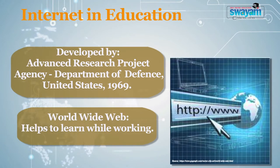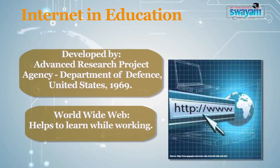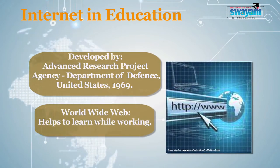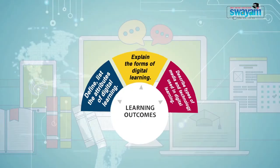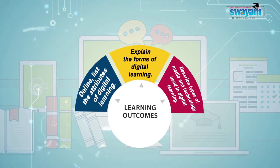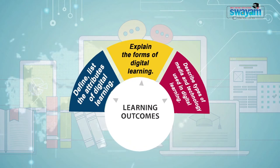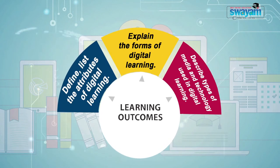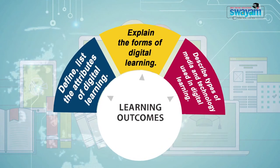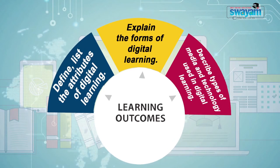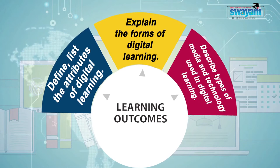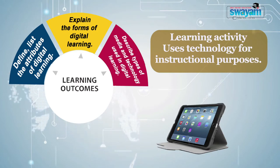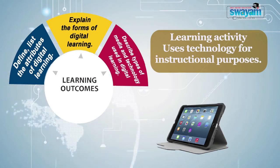This form of digital learning has been used in various programs, and you can easily obtain certificates for any program from reputed institutes using the worldwide web. The learning outcomes of this module: you should be able to define digital learning, list its attributes, understand the forms of digital learning, and describe the various types of media — audio, video, audio-visual — and other technologies used in digital learning.